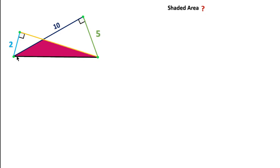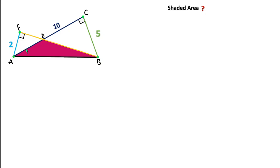To find this shaded region area, I will consider these points as A, B, C, D, and E. We can see that ACB is a right angle triangle, so by using the Pythagorean theorem in triangle ACB we can write AB as the hypotenuse.